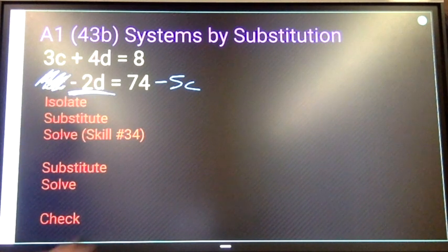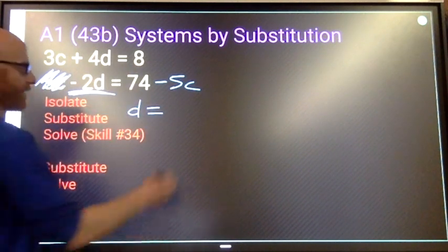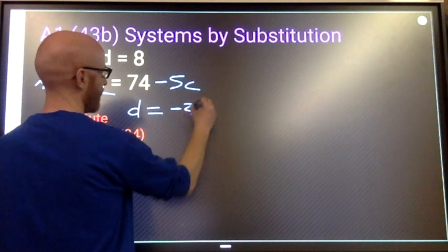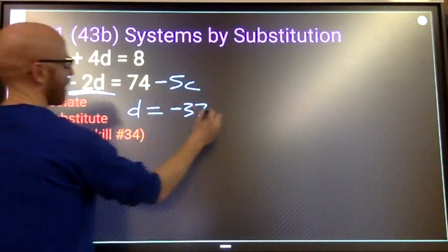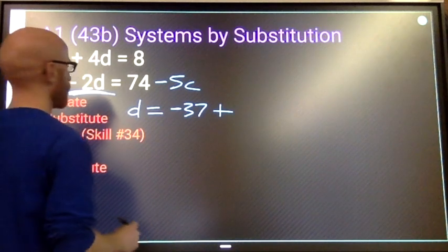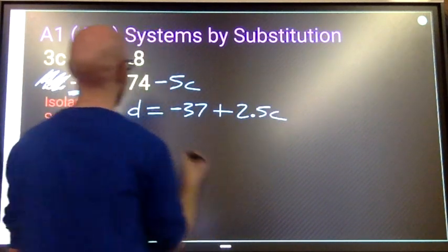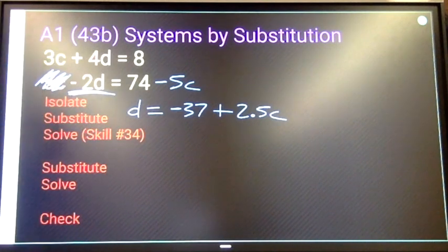Divide both sides by negative 2. We'll have d equals 74 divided by negative 2 is negative 37 plus negative 5 divided by negative 2 is positive 2.5c. Isolated d.